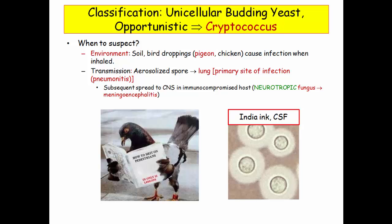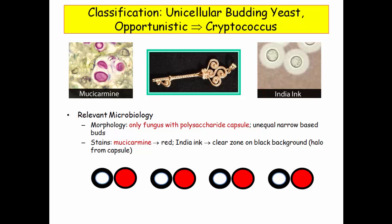If immunocompromised, the organism does spread, and here is the big ticket item with cryptococcus: it is neurotropic, meaning it has a predilection for CNS infection and meningoencephalitis specifically. As for the microbiology, this slide is key.